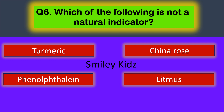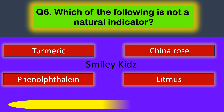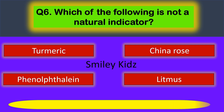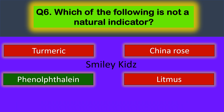Question number six: which of the following is not a natural indicator? Your options are turmeric, china rose, phenolphthalein, and litmus. Your time starts now. Your time is up. The correct answer is phenolphthalein — phenolphthalein is not a natural indicator.